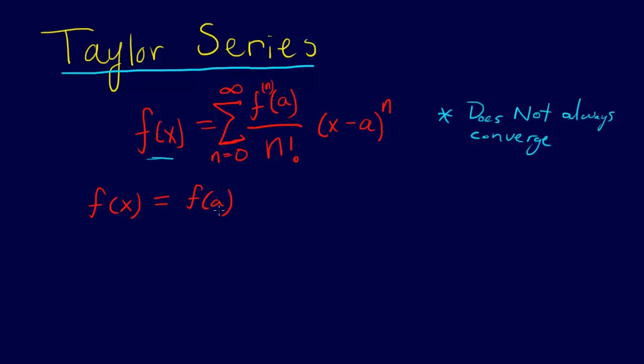So f of a is our first term. If that was all we had, that would be a pretty good representation of our function f of x if x and a are close together. Then f of x is going to be pretty close to f of a. That makes sense, but we can continue adding terms, and as we add terms, we get closer and closer to the actual value here of f of x.